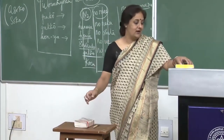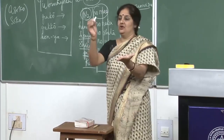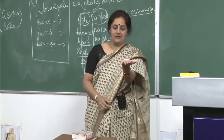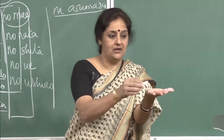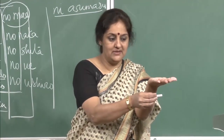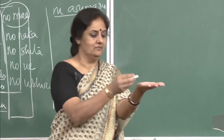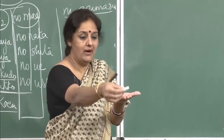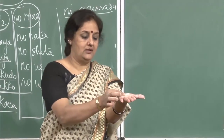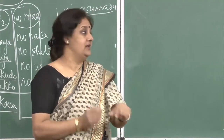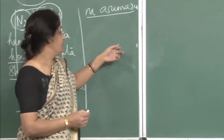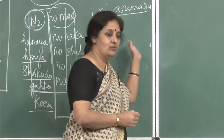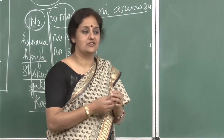A very simple example with a chalk in hand: jisho wa tsukue no ue ni arimasu — on top. Jisho wa tsukue no shita ni arimasu — below or under. Jisho wa tsukue no mae ni arimasu — in front. Chouku wa tsukue no ushiro ni arimasu — behind. Similarly, kokuban — this blackboard — wa watashi no ushiro ni arimasu — it is behind me.